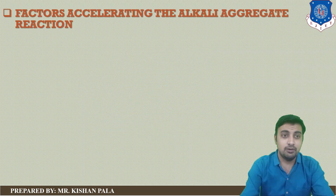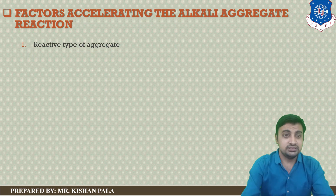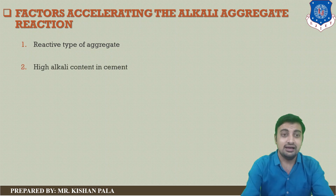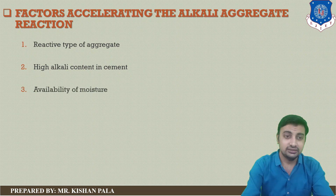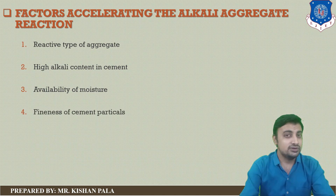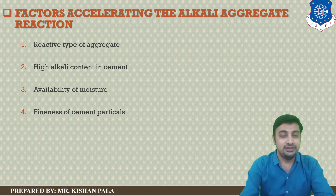Let us discuss the factors affecting alkali aggregate reaction. The first factor is the reactive type of aggregate — if you use reactive aggregate, there is maximum chance of alkali aggregate reaction occurring. The second factor is high alkali content in cement. The third is availability of moisture. The fourth is fineness of cement particles. These are the main factors affecting alkali aggregate reaction.